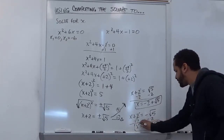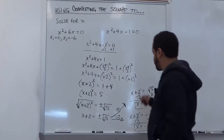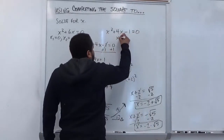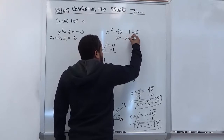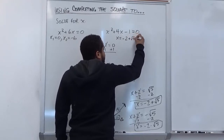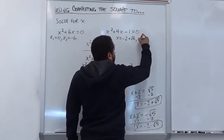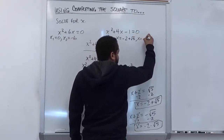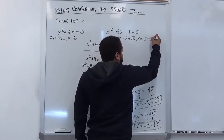And there we have our next two solutions: x equals negative 2 plus the square root of 5, and its conjugate pair, x equals negative 2 minus the square root of 5.